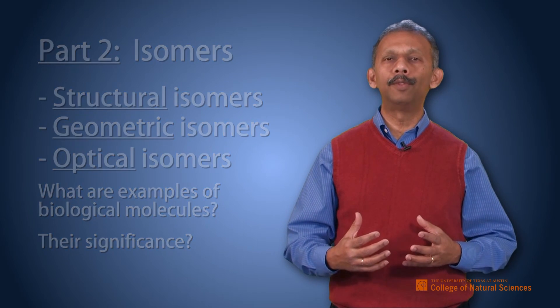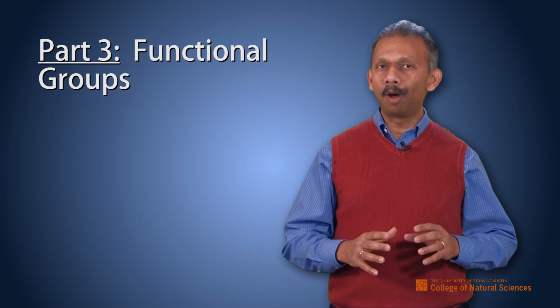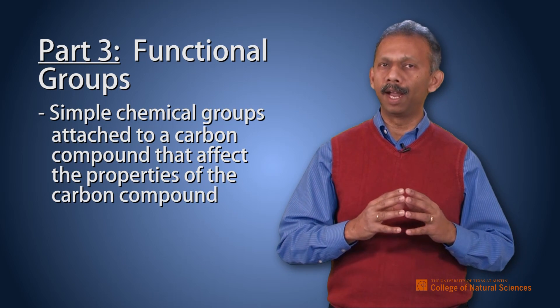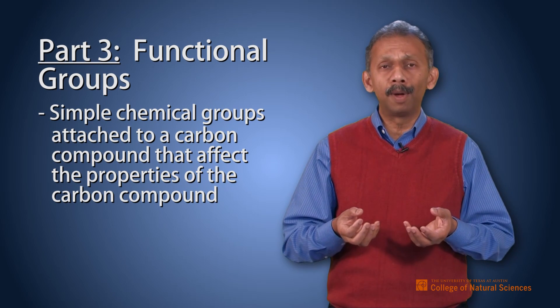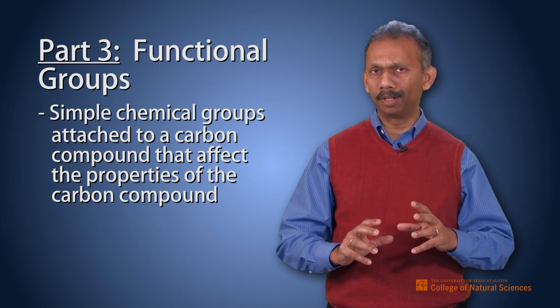Lastly, the third part of this chapter talks about functional groups. Functional groups are simple chemical groups attached to a carbon compound that affect the property of the carbon compound based on their nature and how many of them are present and where they are present.